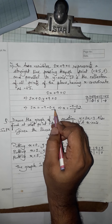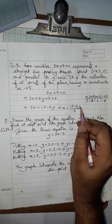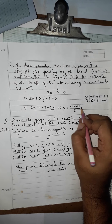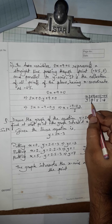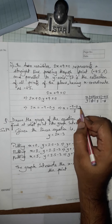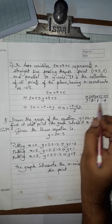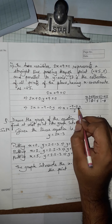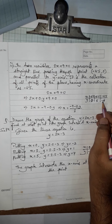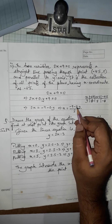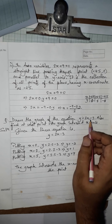So x = (−9 − 0·y) / 2. Now choosing a few values of y: when y = 0, x = −9/2 = −4.5; when y = 5, 0 times 5 = 0, so x = −9/2 = −4.5 again; when y = −4, 0 times −4 = 0, so x = −9/2 = −4.5 again. For every value of y, x remains −4.5.